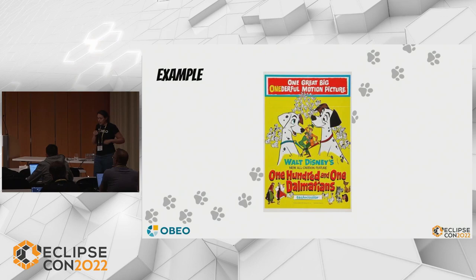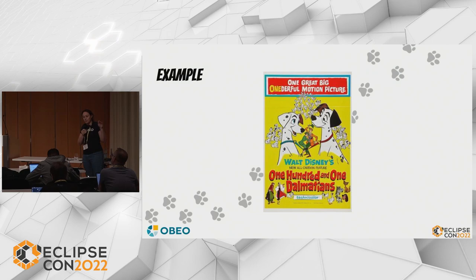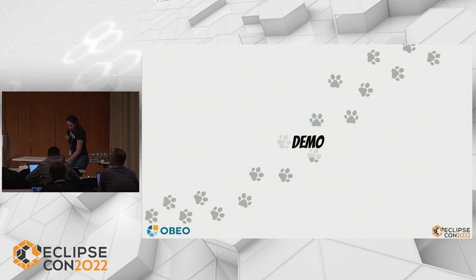During this talk, I will create from scratch a new graphical editor without any line of code. As it is a 101 talk, and as I really love Disney movies, my example is based on the 101 Dalmatians movie. I will represent a city with places, persons, and dogs. Let's go for the demo.